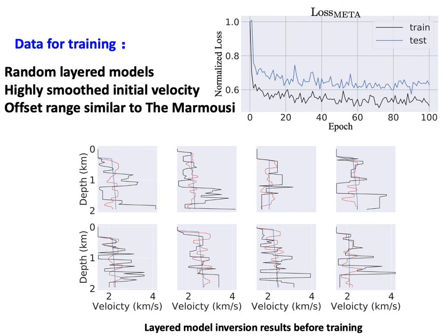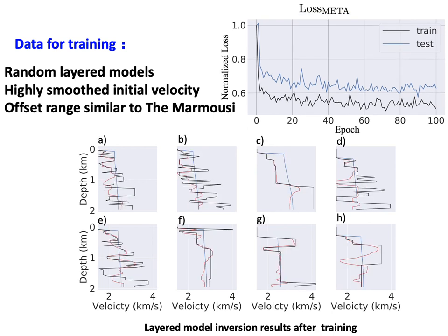The results below show the MLMisfit without training, that is, with random initialization. We can see the initial MLMisfit without training cannot properly update the models. The figures on the right show the training process — the residual drops considerably as training proceeds, demonstrating the success of our training. After training, we can see that it does learn to properly update the models. Looking at the details, some results are very good, especially for the shallow part, meaning that even using such random layered models, we can still reliably train our MLMisfit.